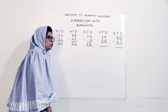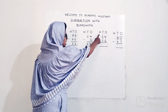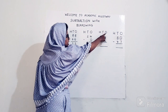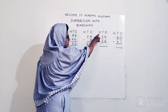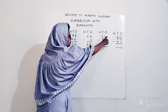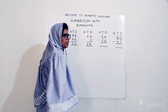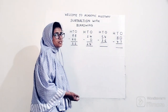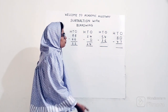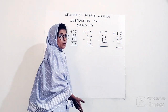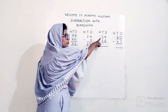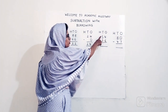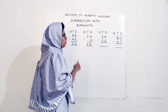Next example. Write HTO. The example is 54 minus 36. Start with ones: 4 minus 6. But how can I do that? If I have 4 chocolates and somebody is asking for 6 chocolates, how will I give them 6 when I only have 4? So what do I do? I borrow from the next number. My next number is 5, and since 4 is less than 6, I take one from 5.